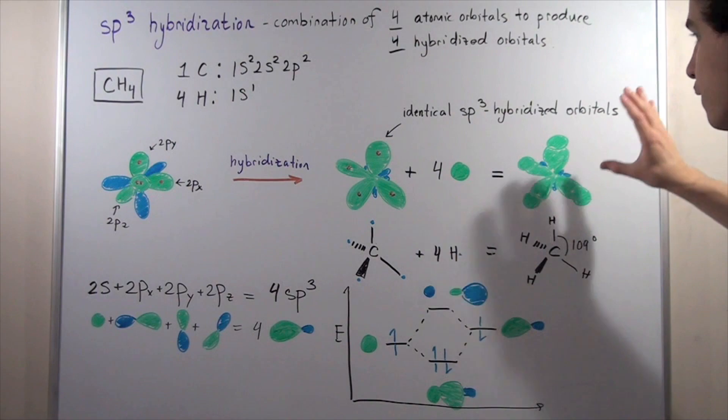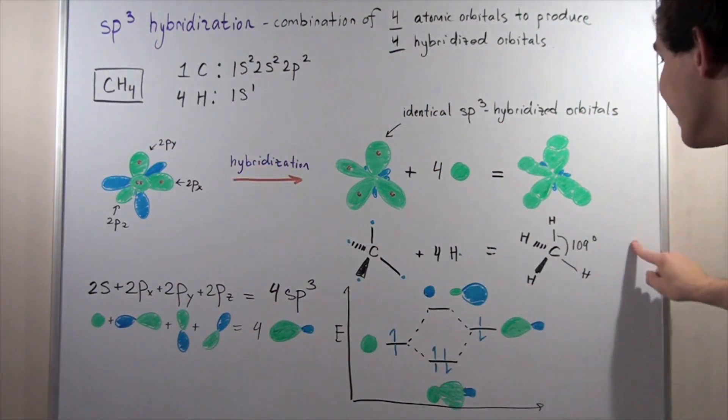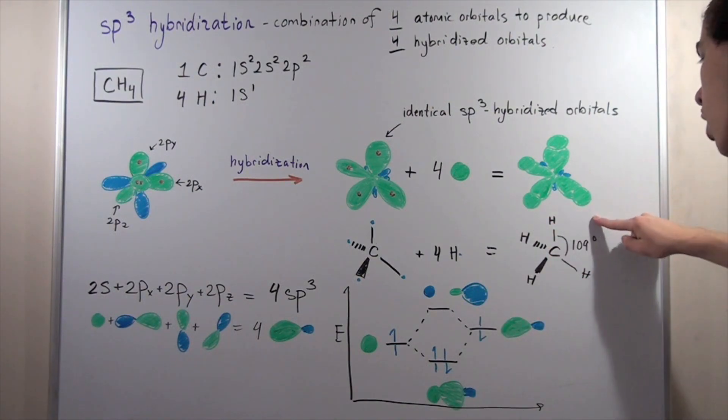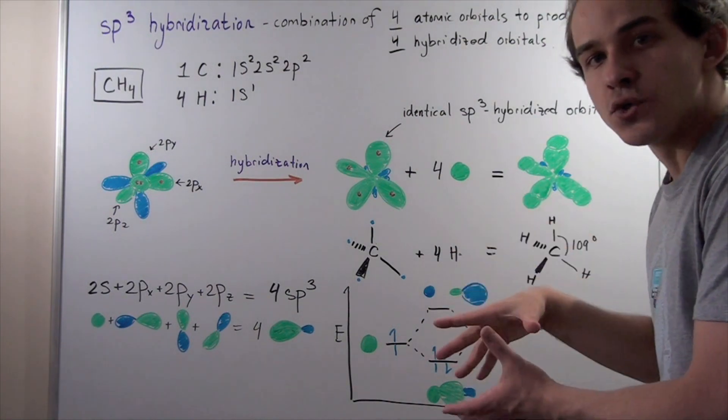For our methane molecule, experimentally, we know that the bond angle between any two C-H bonds is 109 degrees. And this takes the form of a tetrahedron.